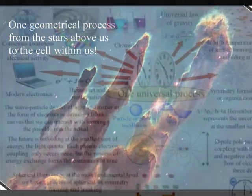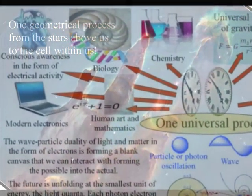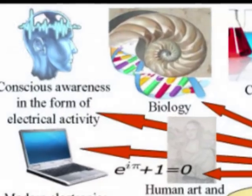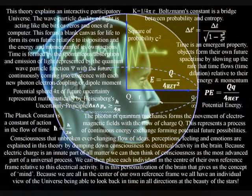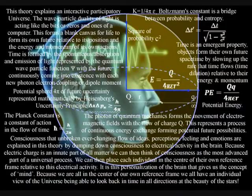The second reason why this theory is difficult to comprehend is represented in the top left-hand corner of the diagram and is because conscious awareness in the form of electrical activity in the brain is an integral part of this process.